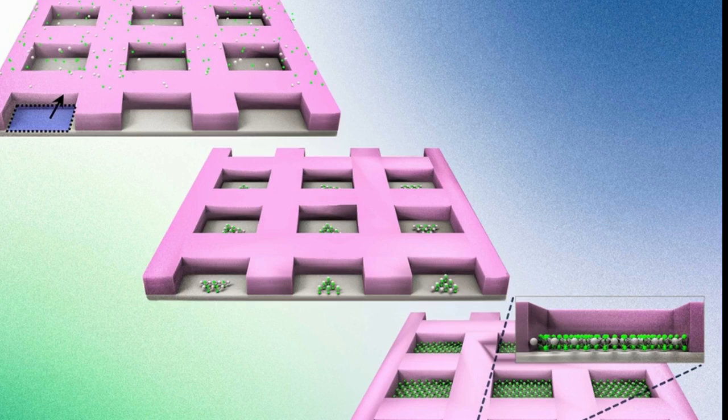Instead, the researchers use conventional vapor deposition methods to pump atoms across a silicon wafer. The atoms eventually settle on the wafer and nucleate, growing into two-dimensional crystal orientations.